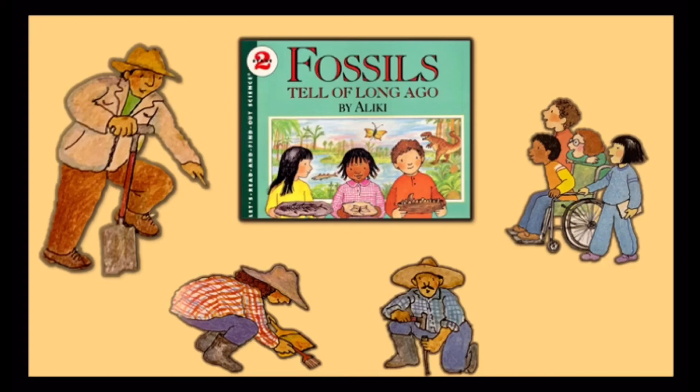Suppose when it dried out you buried your clay imprint. Suppose a million years from now someone found it. Your imprint would be as hard as stone — it would be a fossil of your hand. It would tell the finder something about you. It would tell something about life on earth a million years earlier. Someone would know how big I am, how many fingers I have, that I go to school and take dance lessons and play the piano and sing and read and love avocados.